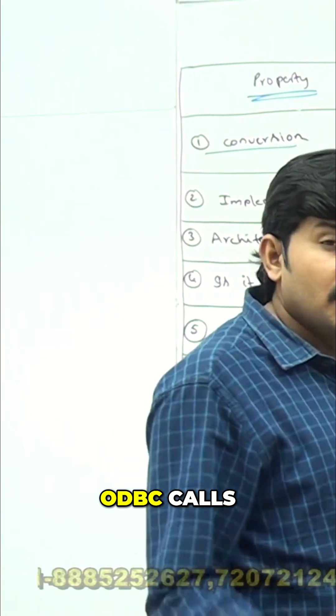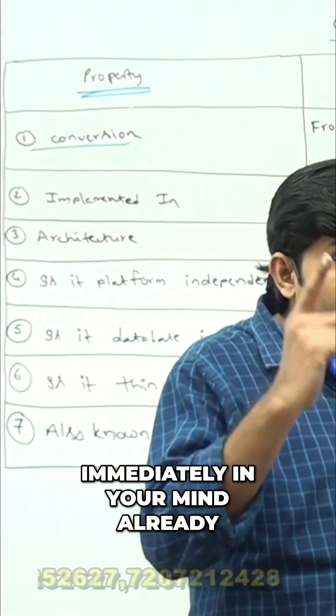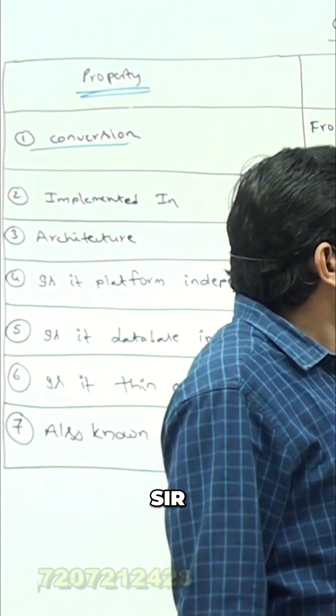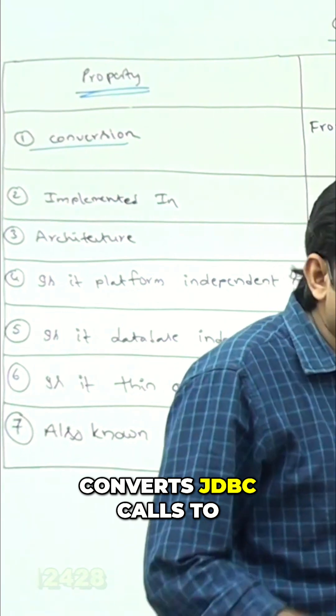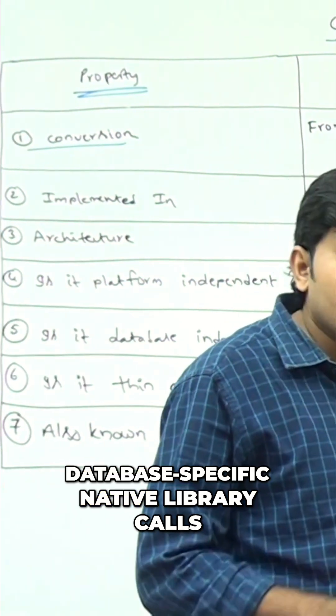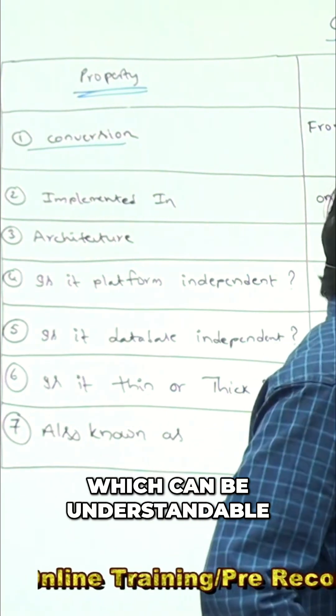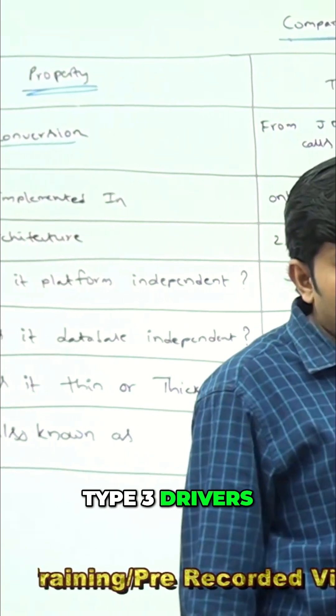But what about type 2 driver? Whenever I'm talking, immediately in your mind, the architecture diagram should be there. Have you remembered? Type 2 driver converts JDBC calls to native library calls - database specific native library calls which can be understandable by database engine. Clear?